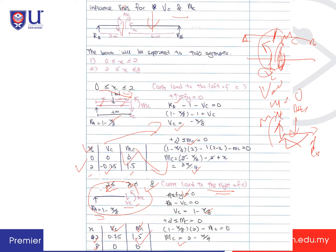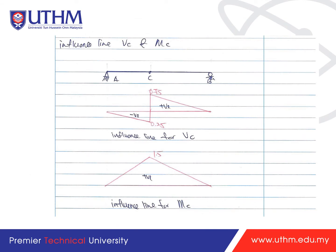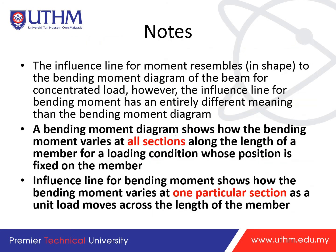Once all values are obtained, plot the influence line for VC and MC. The shear influence line starts with negative shear, then transitions to positive shear with a maximum of 0.75. The bending moment influence line shows a maximum of 1.5. Note: the influence line for moment resembles the bending moment diagram in shape, but has an entirely different meaning — the bending moment diagram shows how bending varies at all sections for a fixed load, while the influence line for bending moment shows how it varies at one particular section as a unit load moves along the beam.